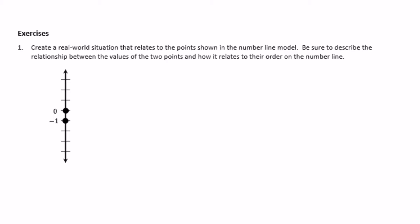Number 1: create a real world situation that relates to the point shown on the number line model. Be sure to describe the relationship between the values of the two points and how it relates to their order on the number line. It's a vertical number line, which makes me think of either elevation or temperature. So I'm going to go with temperature.